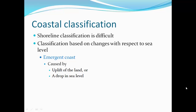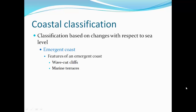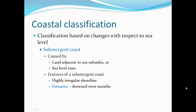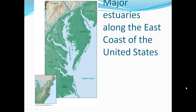Shoreline classification is based on changes with respect to sea level. An emergent coast is caused by uplift of land or a drop in sea level; features include wave-cut cliffs and marine terraces, where a beach is cut into bedrock, the land rises, and a new area forms for waves to erode while the old platform is left exposed. A submerged coast is caused by land subsiding or sea level rising; features include a highly irregular shoreline and estuaries — drowned river mouths — like the St. Lucie estuary in Florida, Chesapeake Bay, and Delaware Bay along the east coast.